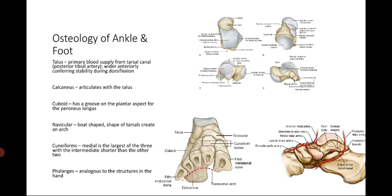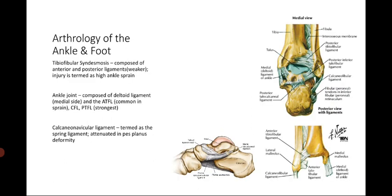The phalanges of the foot are analogous to the structures of the hand. For the arthrology of the ankle and foot, the tibiofibular syndesmosis is composed of two ligaments — anterior and posterior — with the posterior being the weaker side. Injury to the tibiofibular syndesmosis is termed a high ankle sprain. The ankle joint has the deltoid ligament on the medial side, and the ATFL, CFL, and PTFL on the lateral side, with the PTFL being the strongest lateral ligament. The calcaneonavicular ligament is termed the spring ligament and is often attenuated in patients with flat foot deformity.